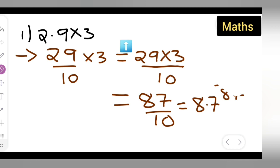So I hope this is the way you'll have to multiply. I hope you have understood how to multiply 2.9 multiplied by 3.